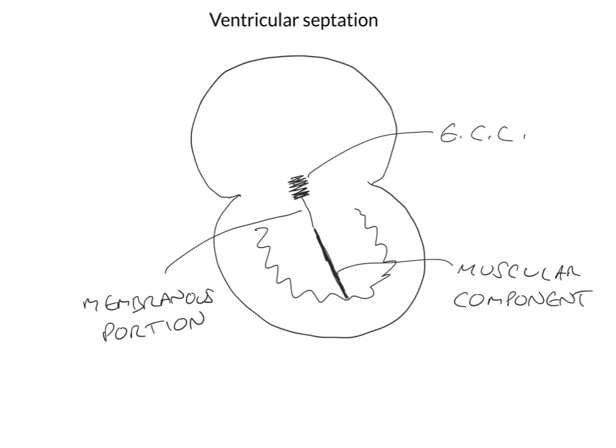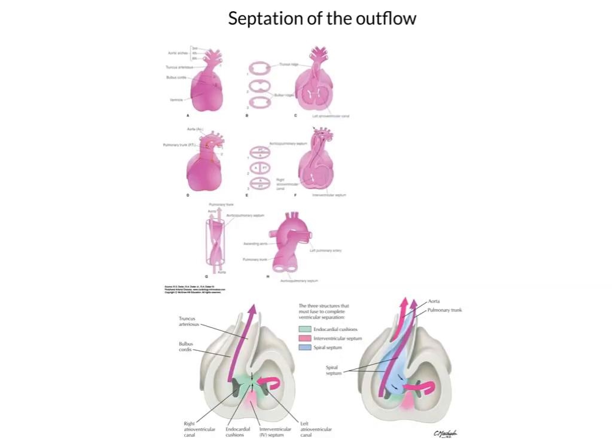So that's the relatively simple process of ventricular septation. However, we need to look at the way in which the outflow tract is septated. And this is a little bit more involved, but arguably much more fascinating.